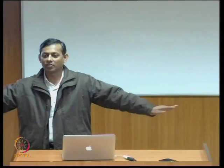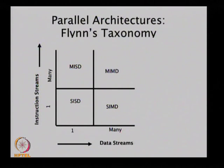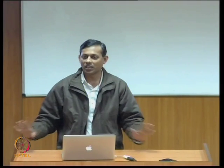In SIMD, you say add these two numbers, but there is an array of numbers: the first two are added to produce the first result, the second two to produce the second result, and so on. This is data parallelism — the same instruction applied to lots of data concurrently. The more generic category is MIMD: multiple instructions on multiple data. You have a number of processors, everybody has its own piece of data, everybody is running its own instruction on its own piece of data. That is the most generic type of architecture.